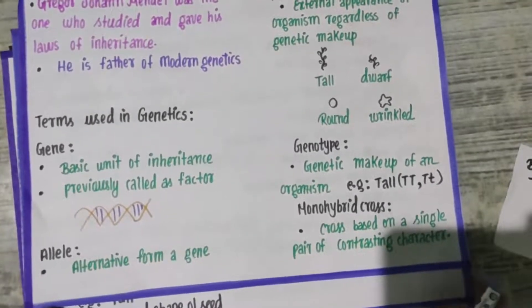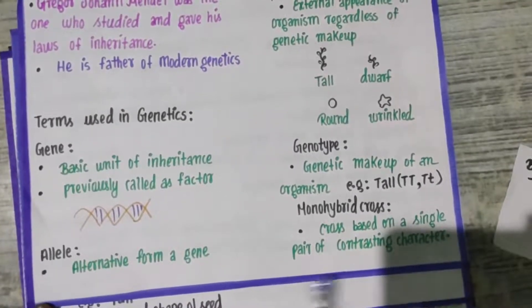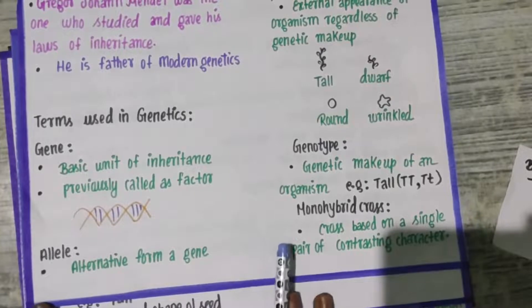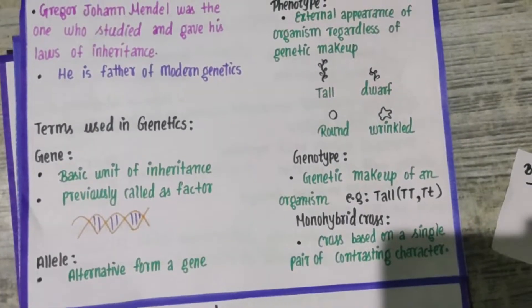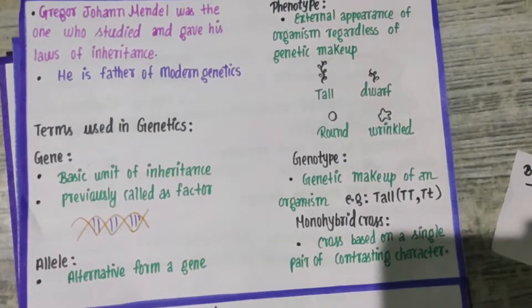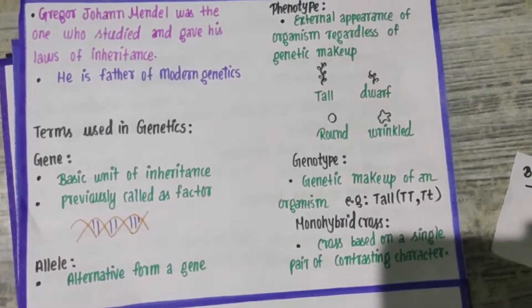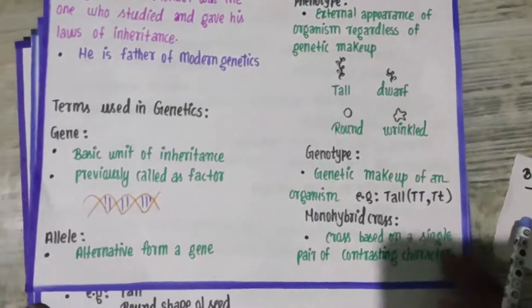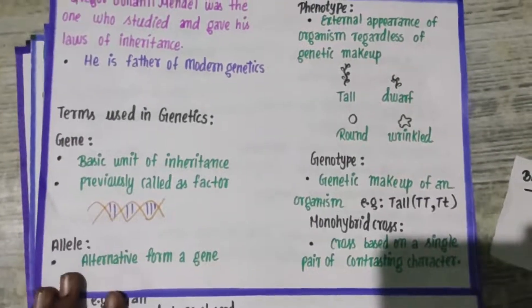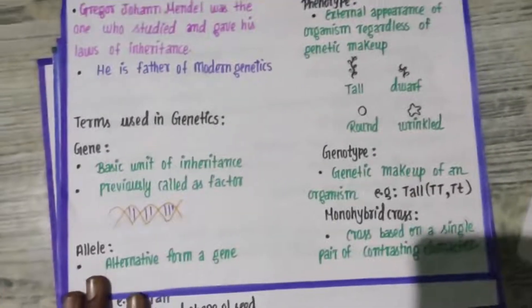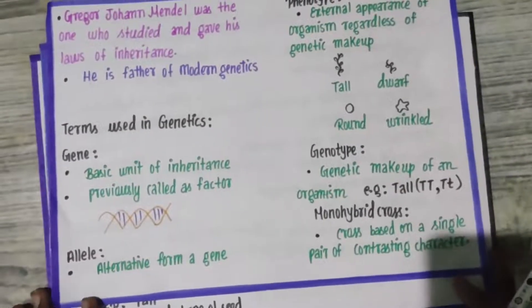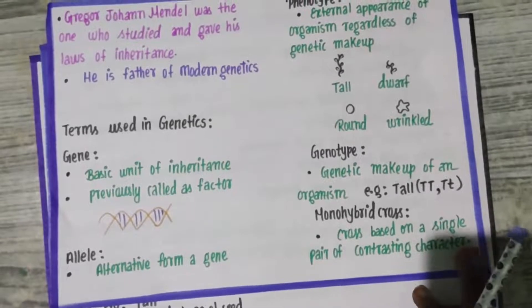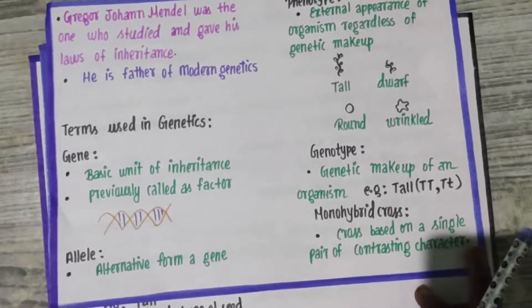Allele is the same gene present at the same locus. One allele comes from the father and one comes from the mother. In the gamete, there is one allele per character.